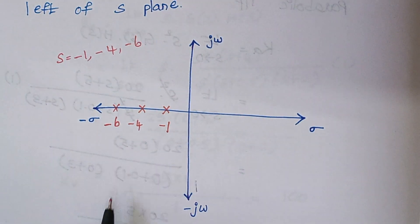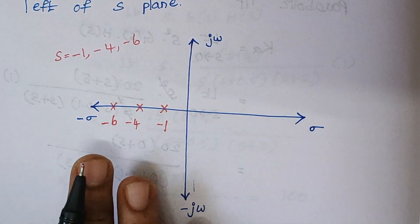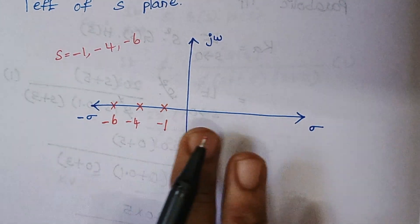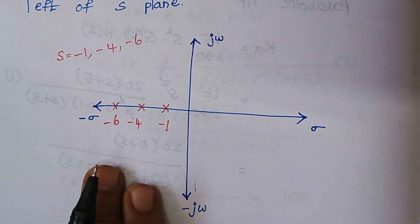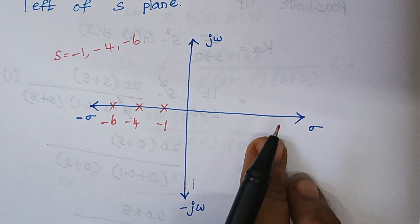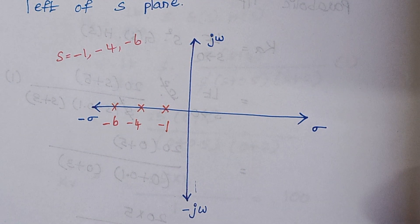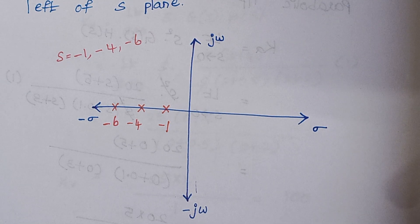So this is our S plane. So in this S plane, the location of roots should be on the left half of the S plane. Only on the left hand side part, you should have your roots allocated. Even if a single root lies on the right hand side, then the system is said to be unstable. Hope I have made the concept clear.